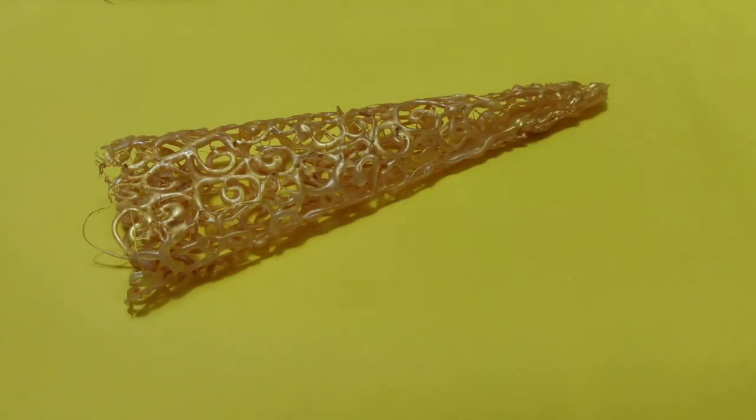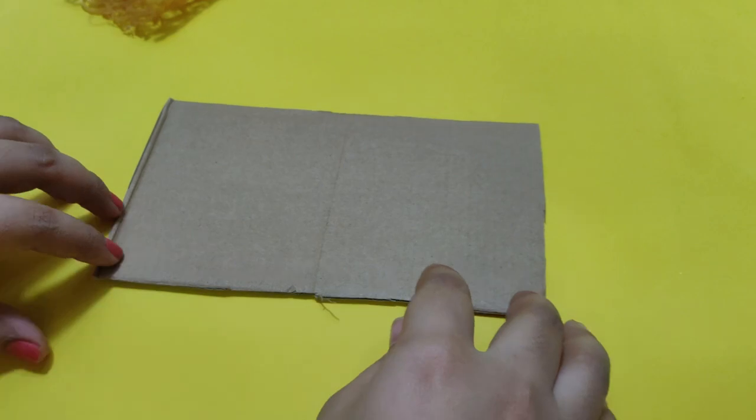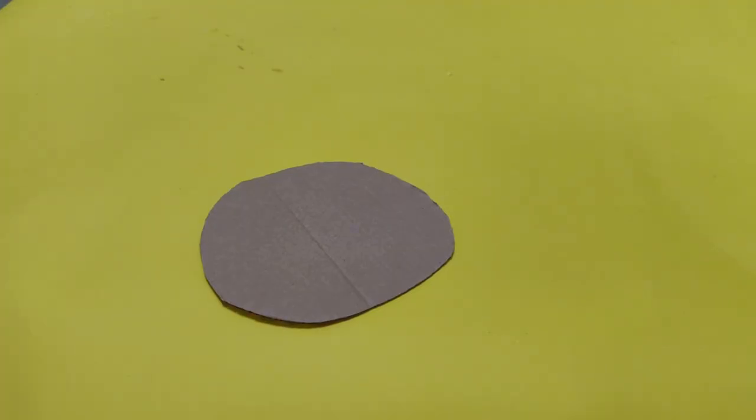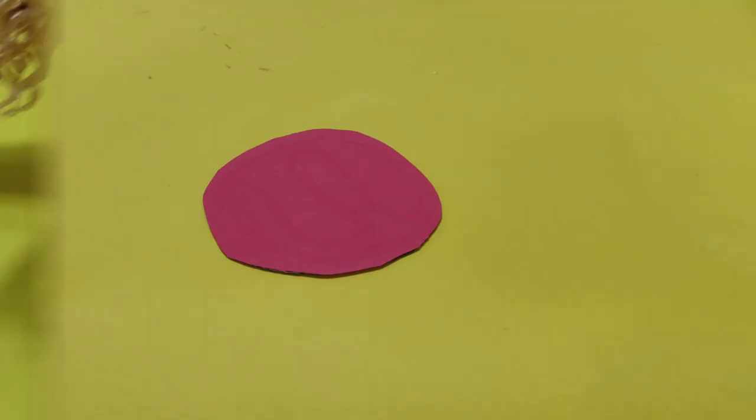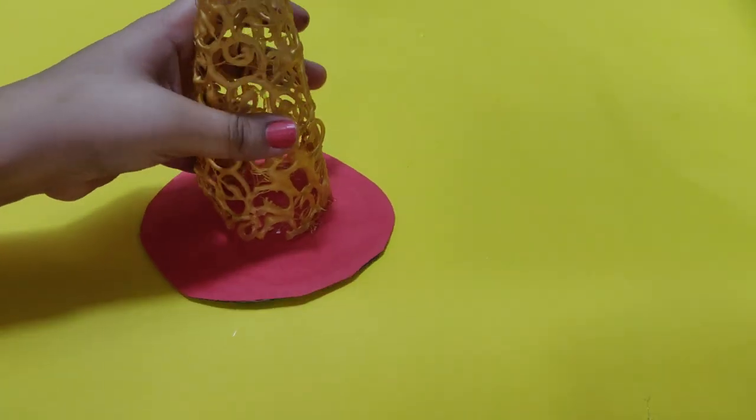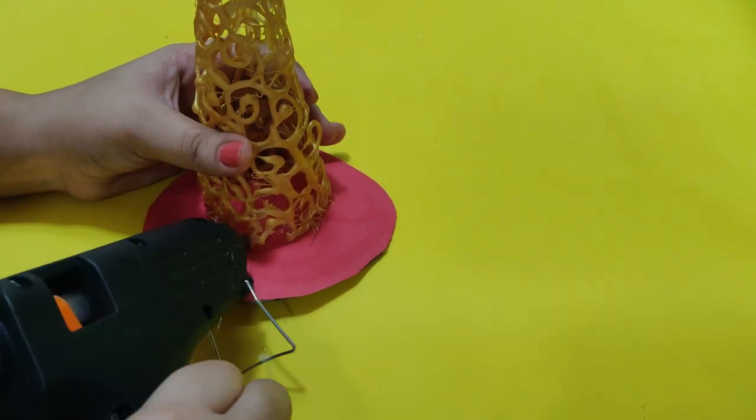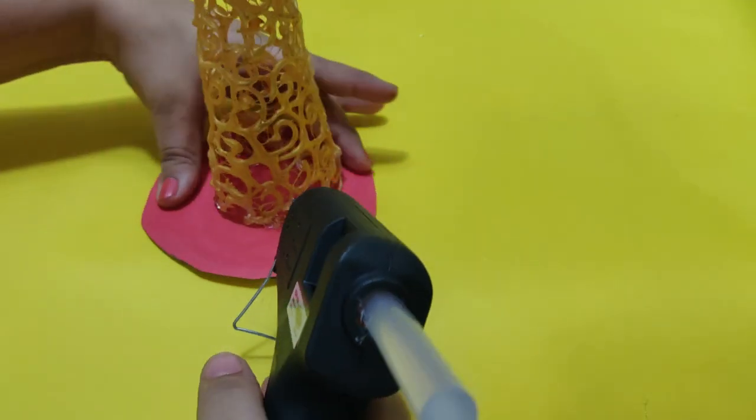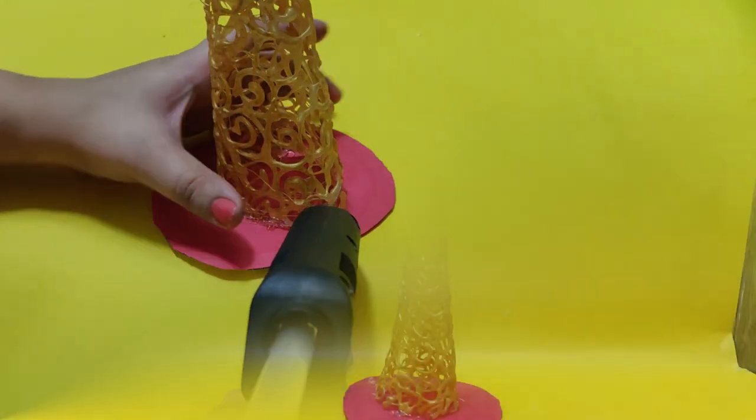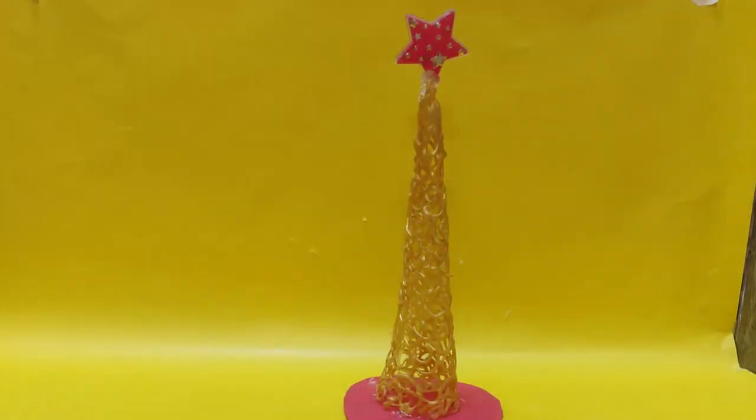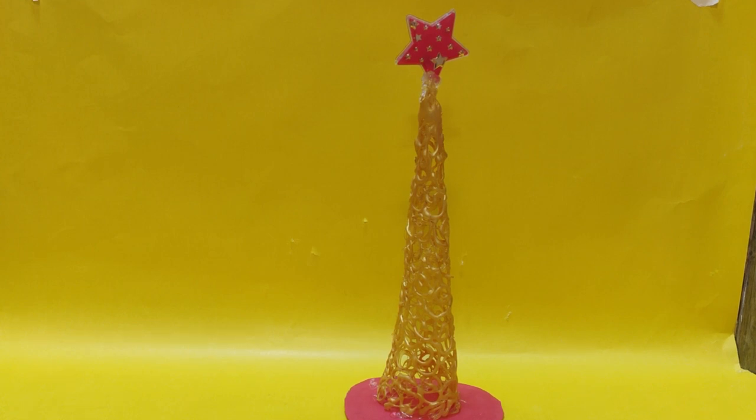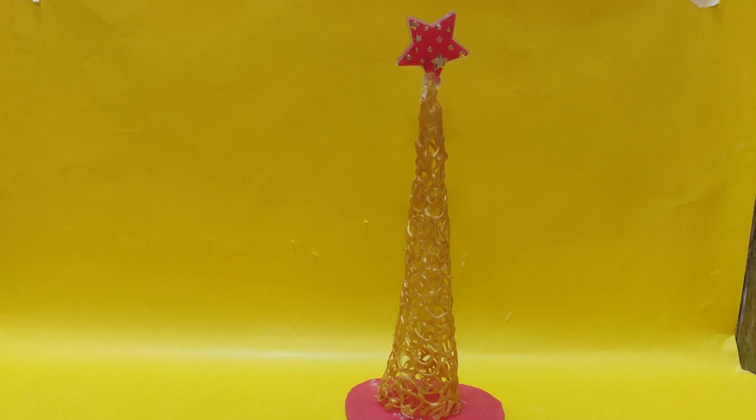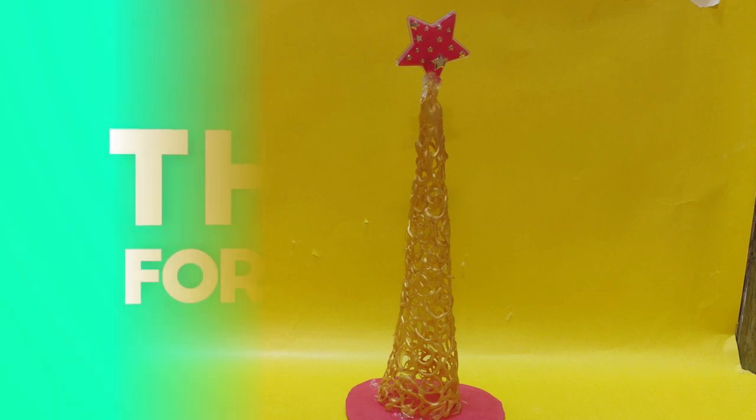I let the design dry, then spray paint it gold. I stick it together with glue and red paper. My fifth item is ready. If you liked this video, please like, share, comment and subscribe. See you soon!